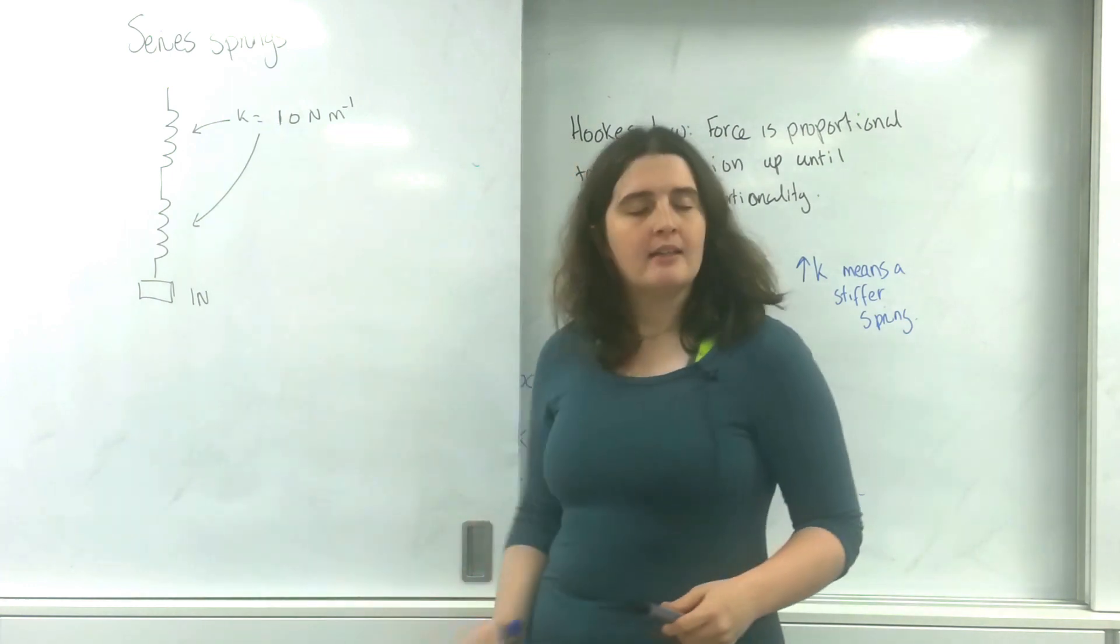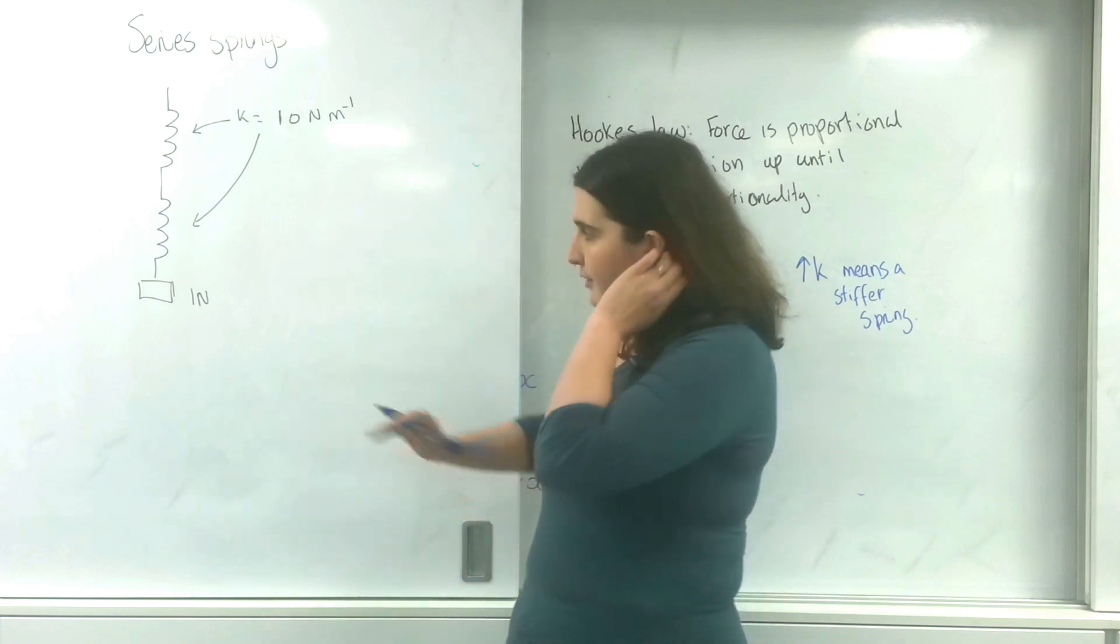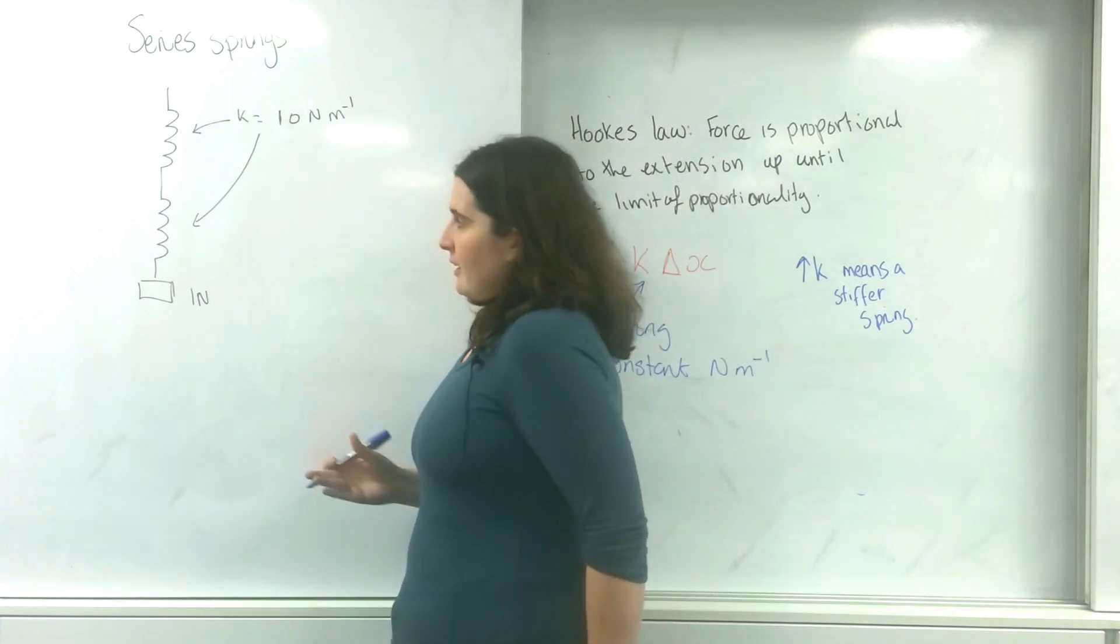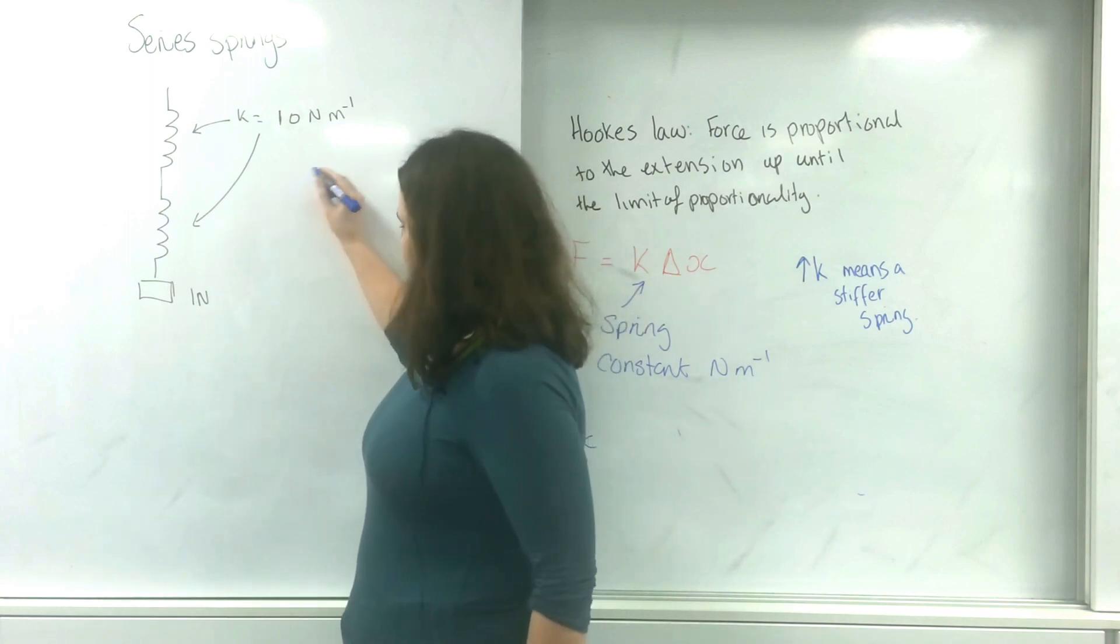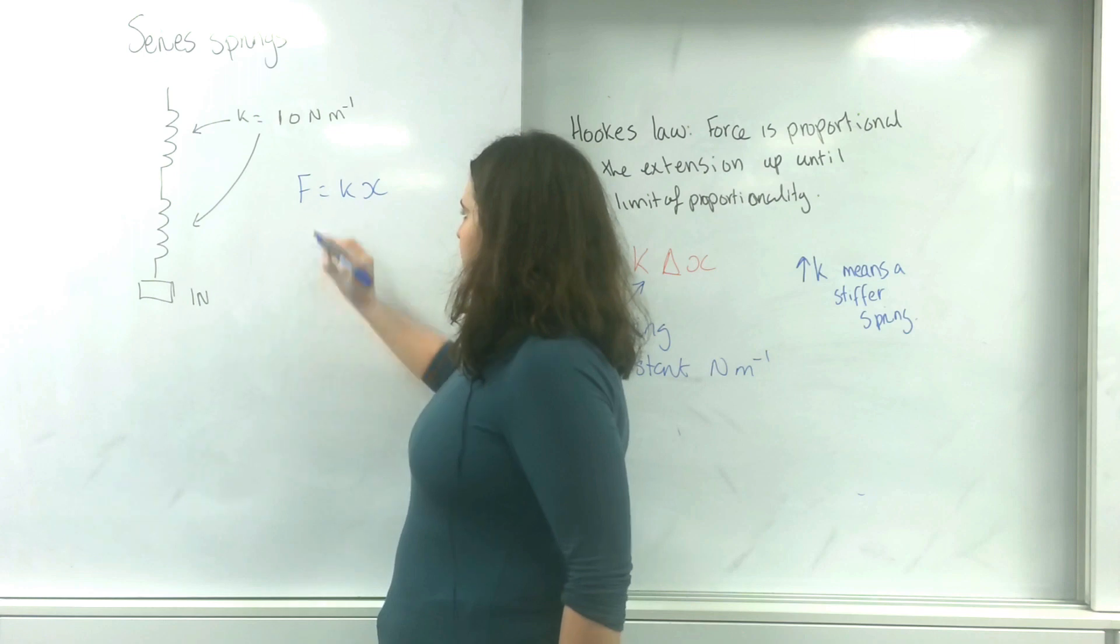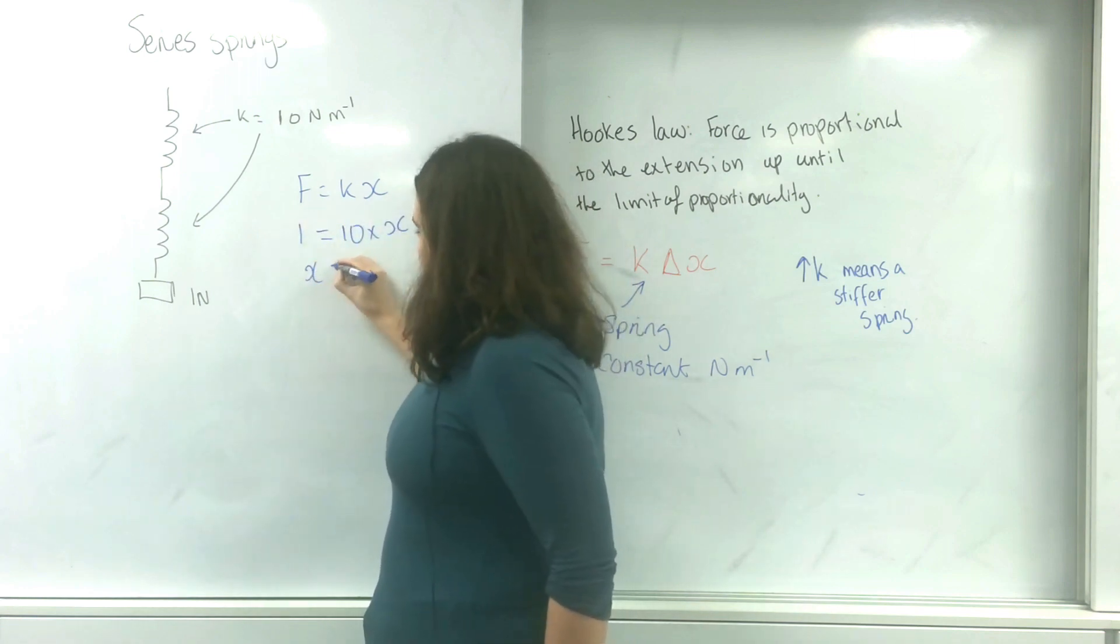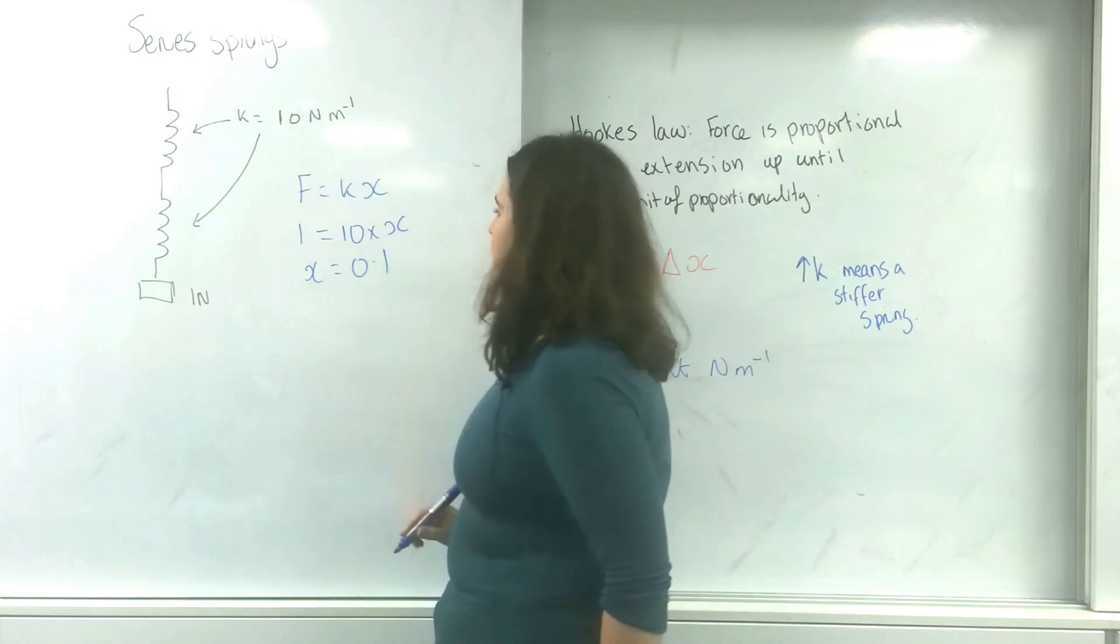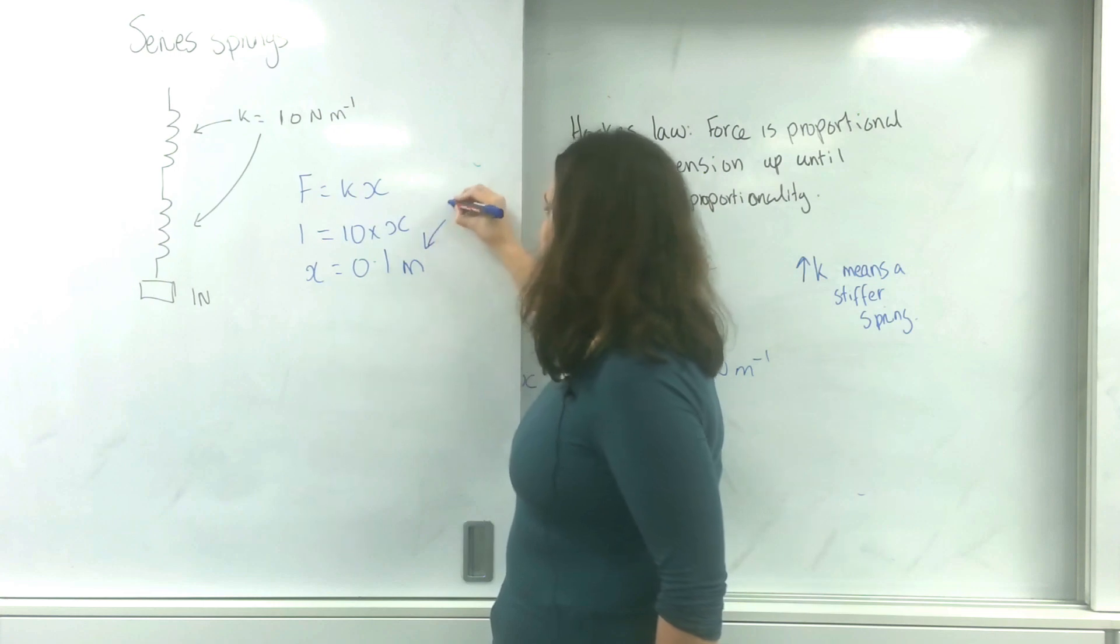Their spring constant K is 10 newtons and the force on it is 1. So let's work out the extension for one of the springs. Force equals Kx, so 1 equals 10 times the extension. The extension of one of the springs is going to be 0.1 metres. And this is for one of the springs.